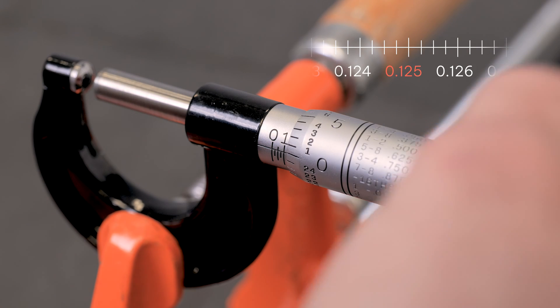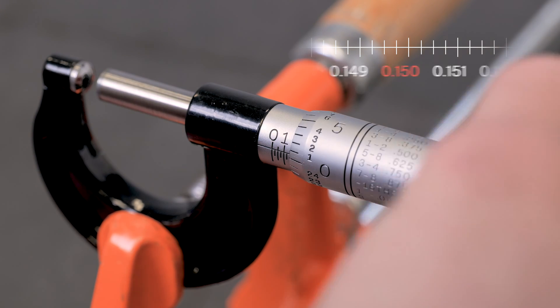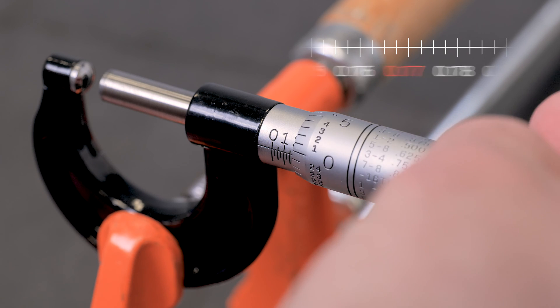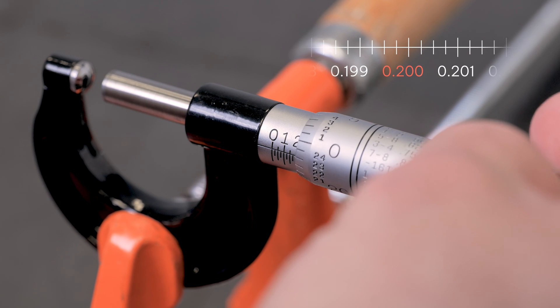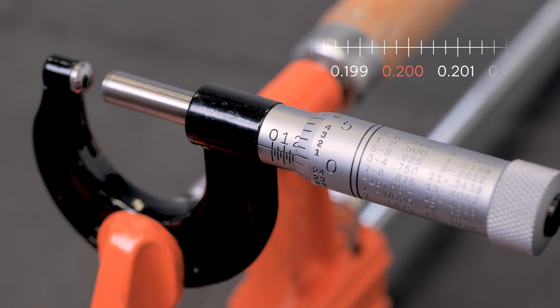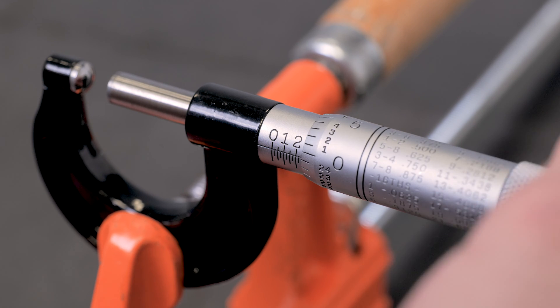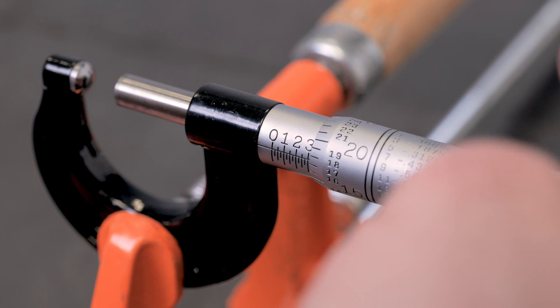And I can continue on to 125, 150, 175, and as I come back around again, I see the two emerging. That would be 200 thousandths. And you just continue this all the way out till you come to a full one inch of measurement.